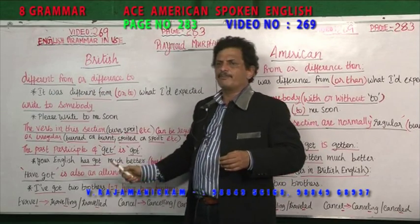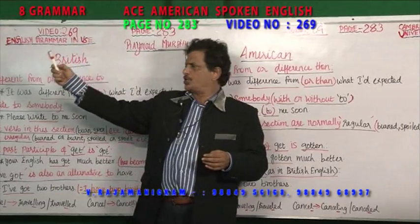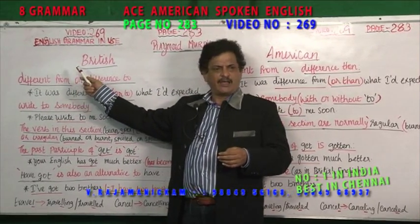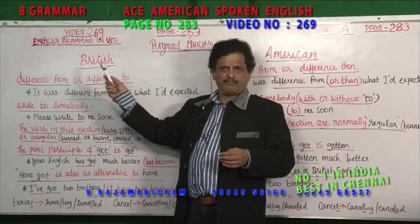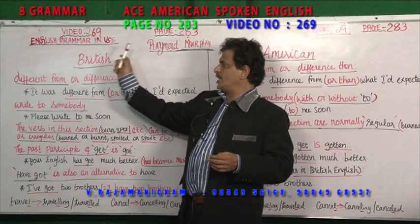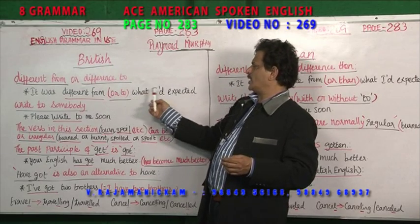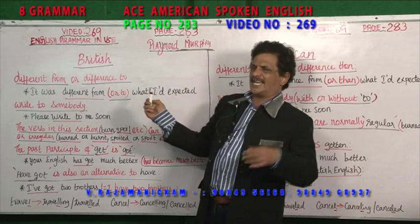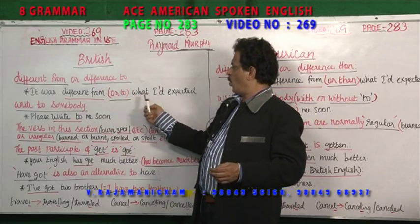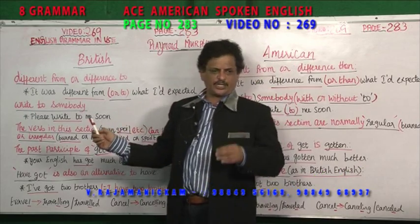"Different" is an adjective; "difference" is a noun. In British English, after "different" you use the preposition "from" or "to". For example: "It was different from what I had expected" or "It was different to what I had expected" — you can use either.